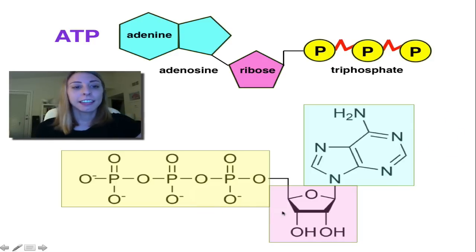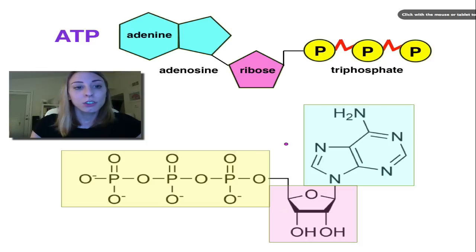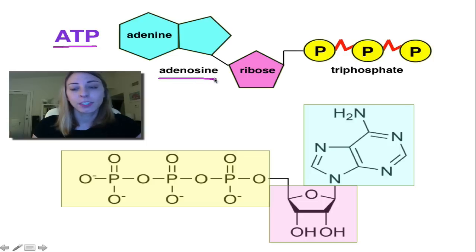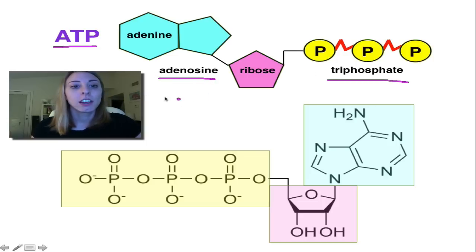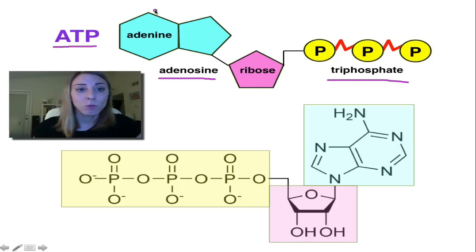So the ATP structure itself — let's briefly go over that. ATP actually stands for adenosine triphosphate. The adenosine part of our ATP is actually made up of two things: we have an adenine, which is right here in the blue.